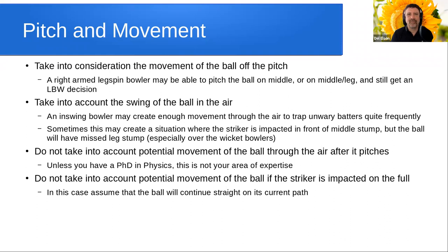You do not take into account potential movement of the ball through the air after it pitches. It may be possible for some expert bowlers to bowl a delivery in such a way that it moves through the air after it strikes the pitch — swings through the air. Unless you're an expert physicist, that's not your area of expertise. You should assume always that the ball continues on its current path — not necessarily in a straight line towards the stumps, but continuing in a straight line on its current path.